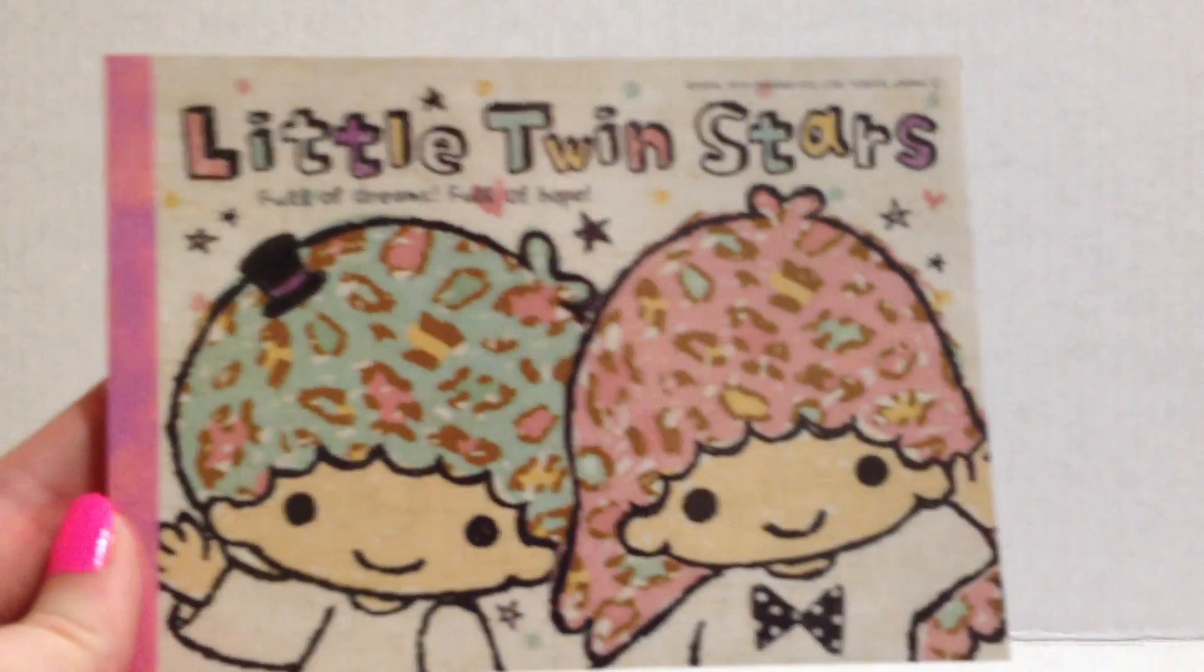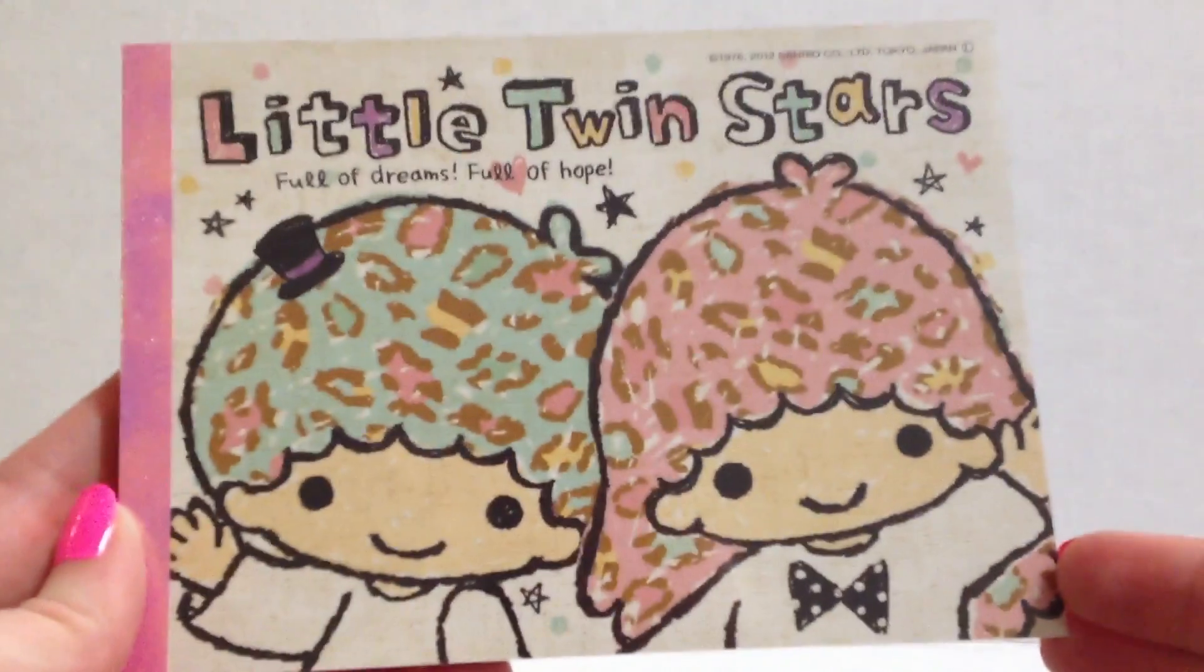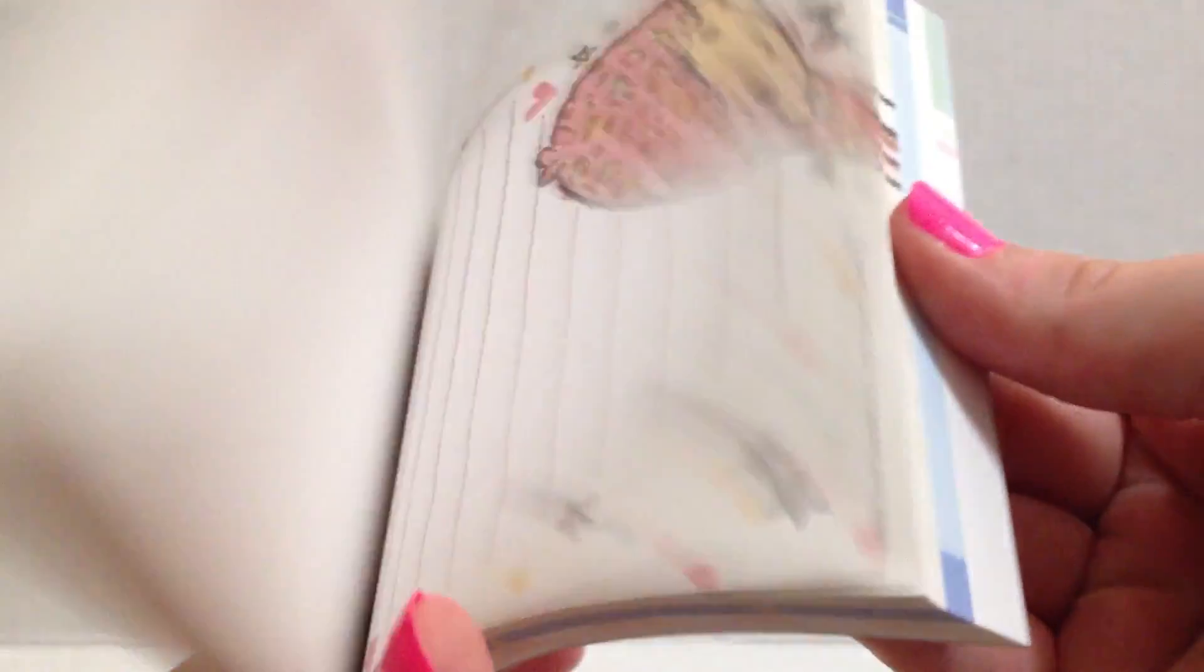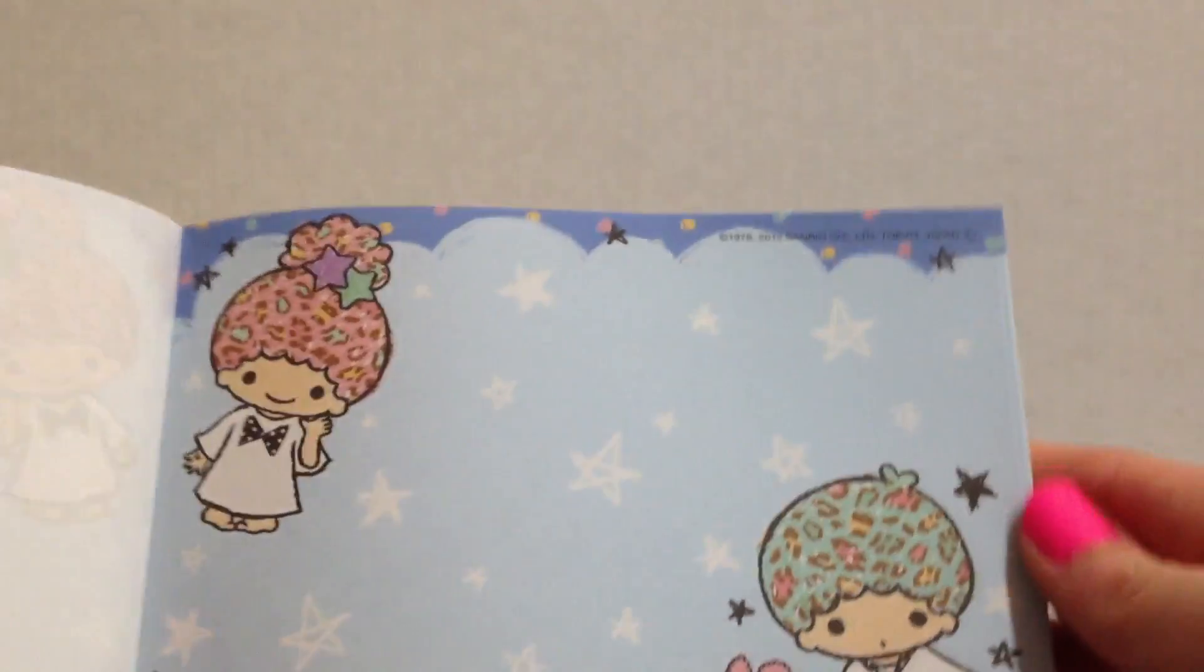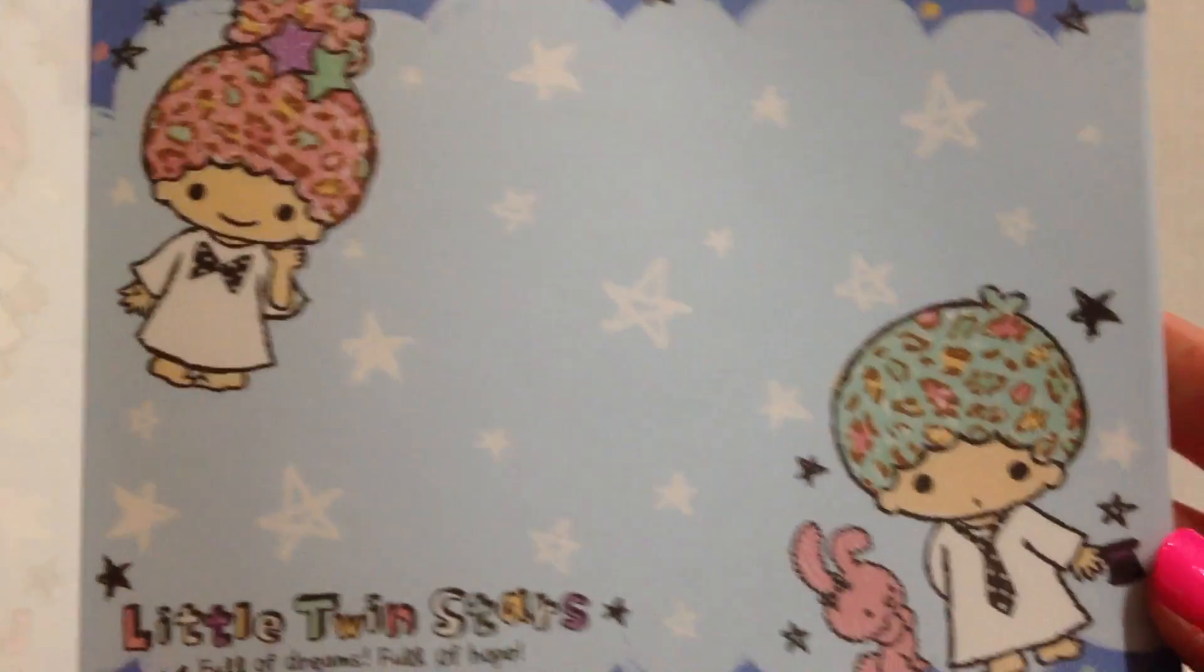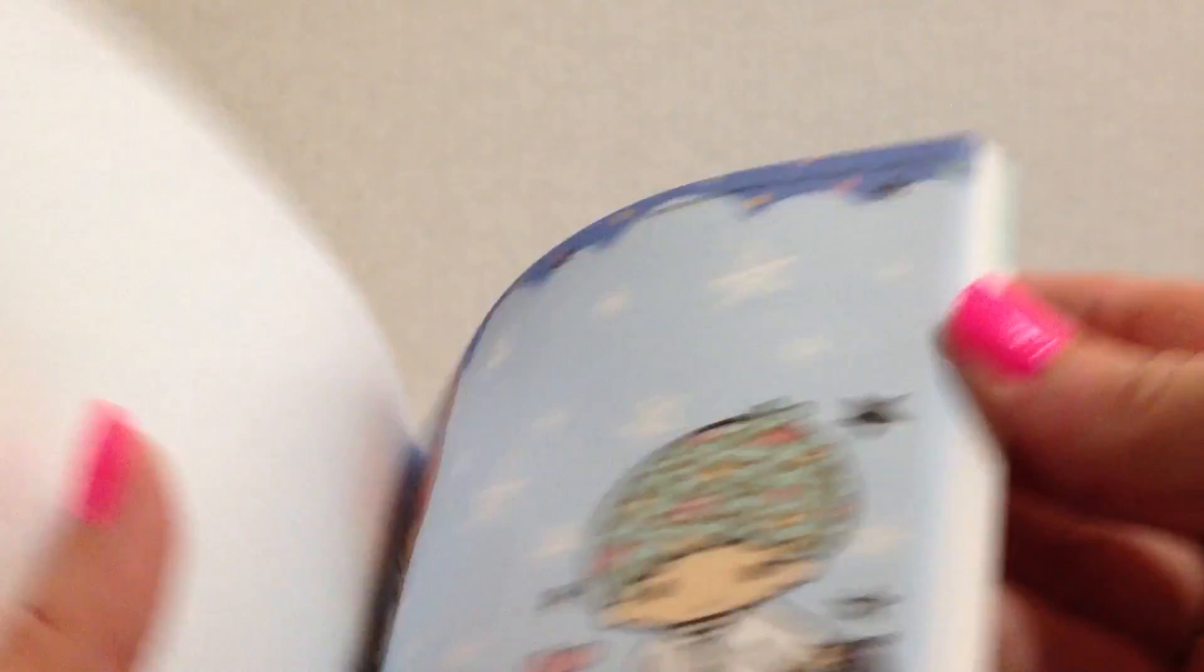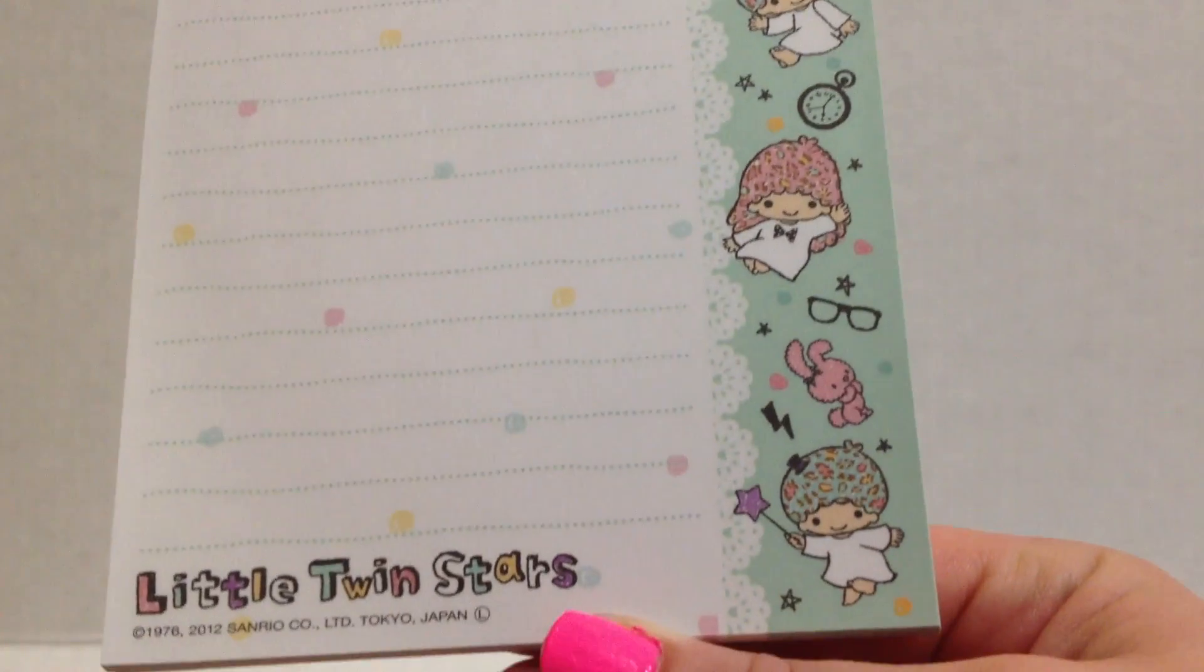Okay, so this is the memo pad and they have leopard hair. So there's this design, this design which has a little bun which I think is really really cute, this design, and this design. There's like little nerd glasses. So that is super cute.